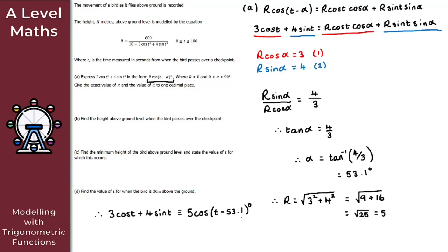For questions like this, ensure that you express the final answer in the required form. So the solution to part A is 3cosT + 4sinT = 5cos(T − 53.1°).